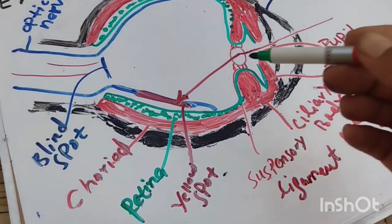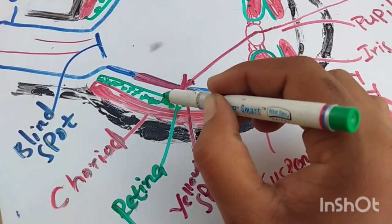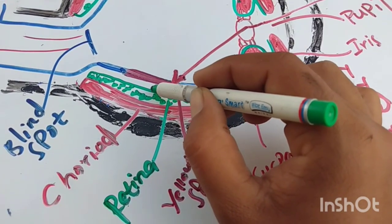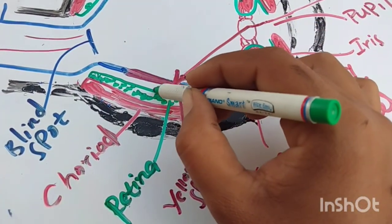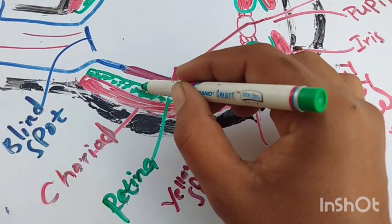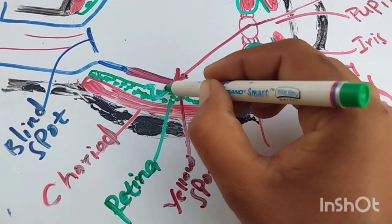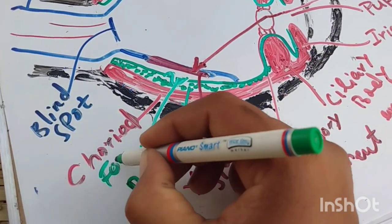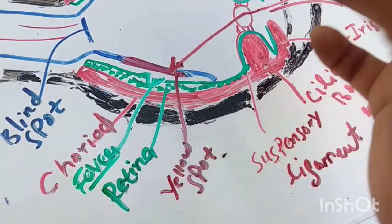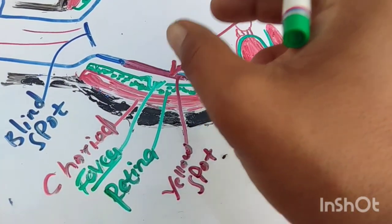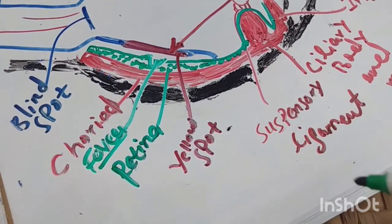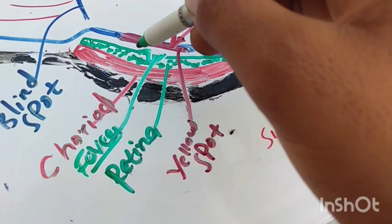One thing I missed about the retina: there is a bulging-type structure present on the retina called the fovea. The fovea stores light for some time. It is present on the retina.